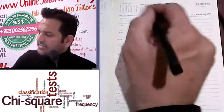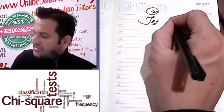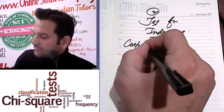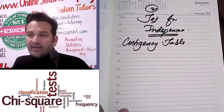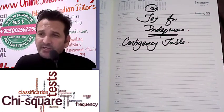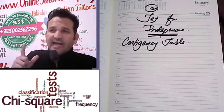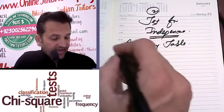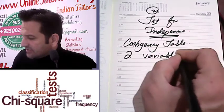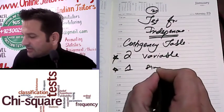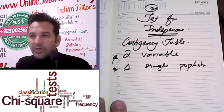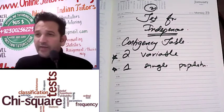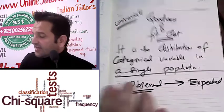The second one is the test for independence. This test is also known as the contingency table. In this test, we have two variables and a single population. We consult two variables to determine whether there is an association between them or not.